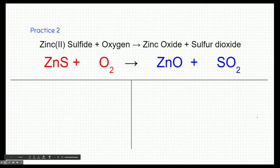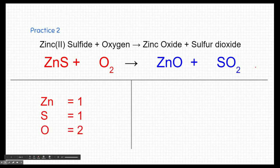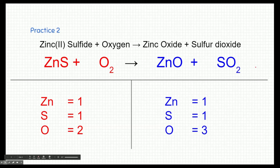Let's check if this formula is balanced by accounting for each side. On the reactant side: one zinc, one sulfur, and two oxygens. On the product side: one zinc — balanced — one sulfur, but three oxygen elements on the right. So this reaction is not balanced; it's not obeying the law of conservation of mass, and it's our job to fix it by adding coefficients.